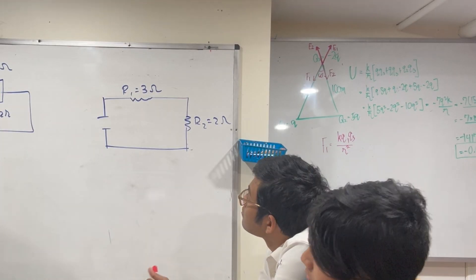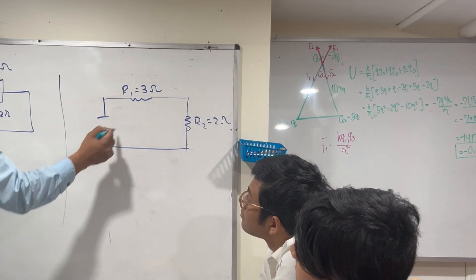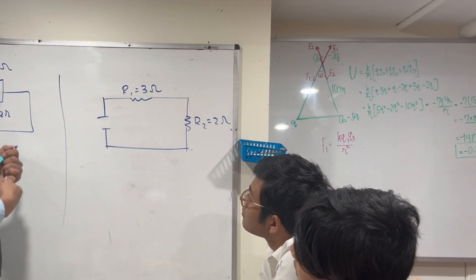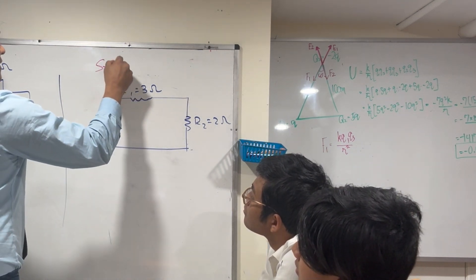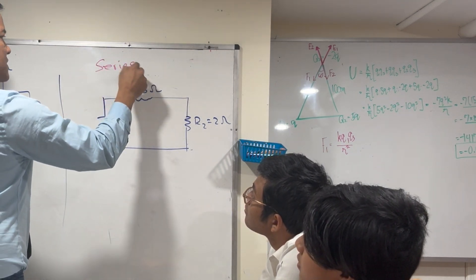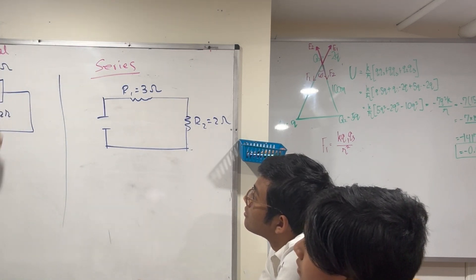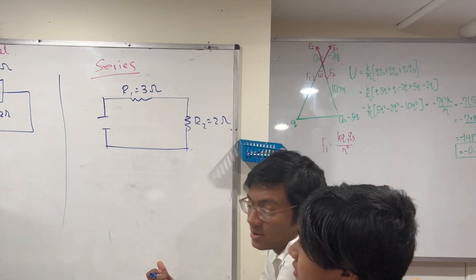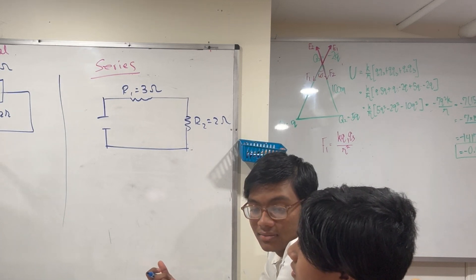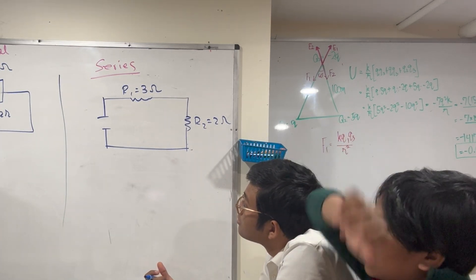Okay, Isaac, pay attention. What is the name of this circuit? — That's a series. And Raff from Brown, what is the name of this circuit? — It's parallel. Someone suggested it might be a hybrid, but no, this is just parallel. This is not complex — it's just parallel.